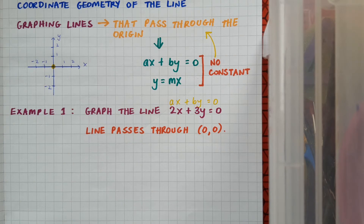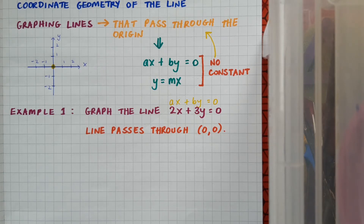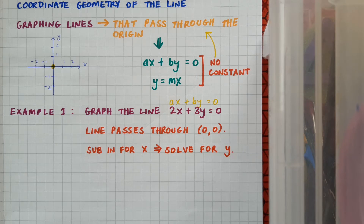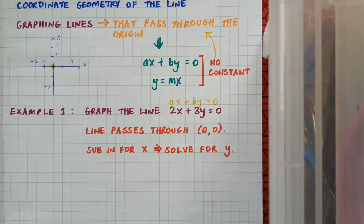A line passes through many points, and all I have to do to find one of them is substitute a value into my equation for x and then find the resulting answer for y. When I do that, that x-y pair is a point on the line. In reality I can put any value I like in for x, but in practical terms it's good to put a number in that'll give me a nice answer out for y.